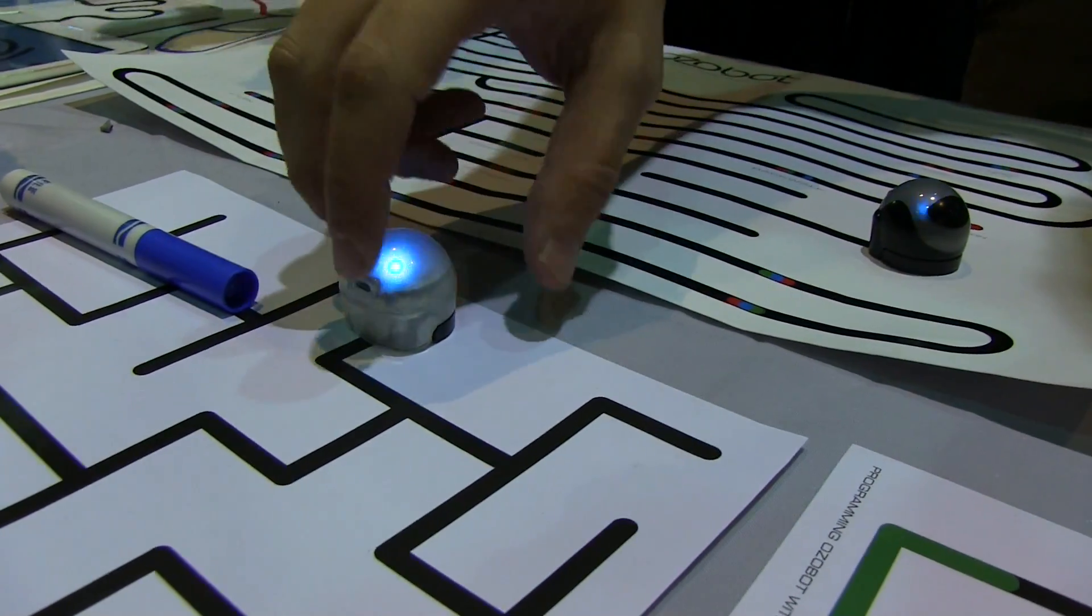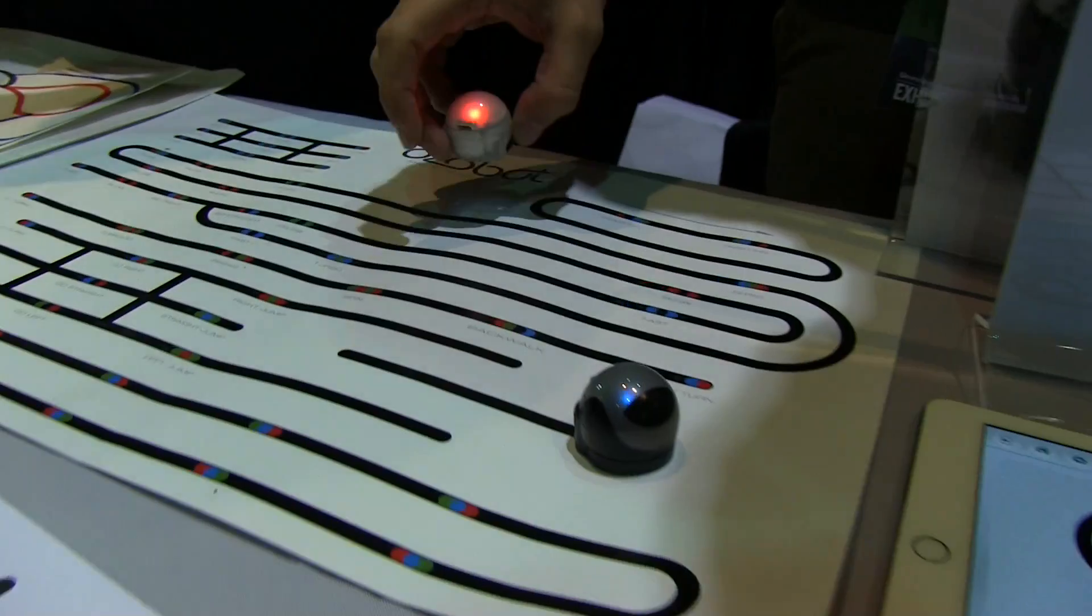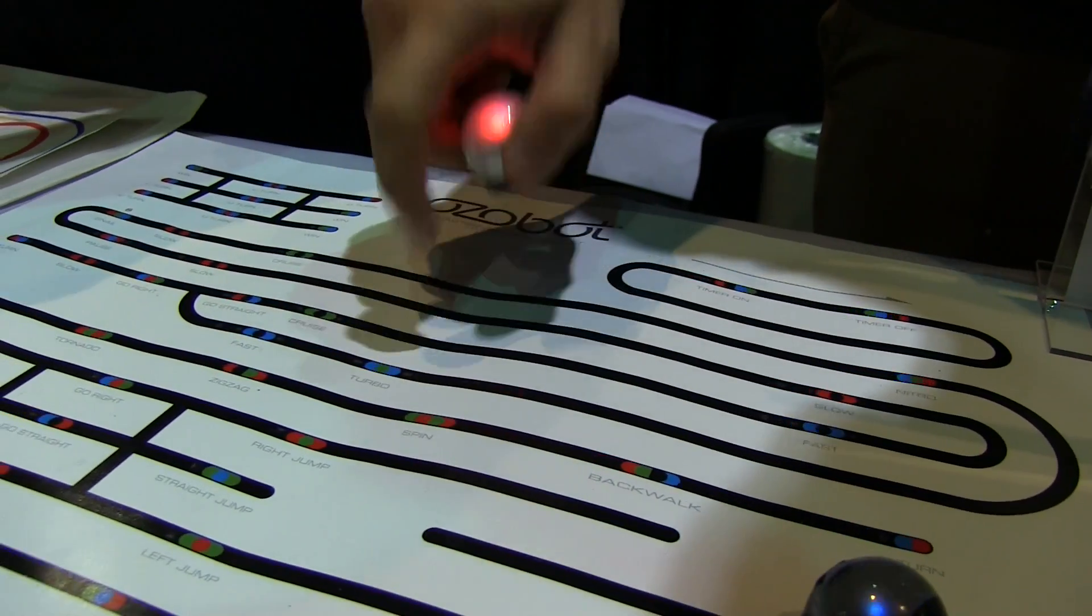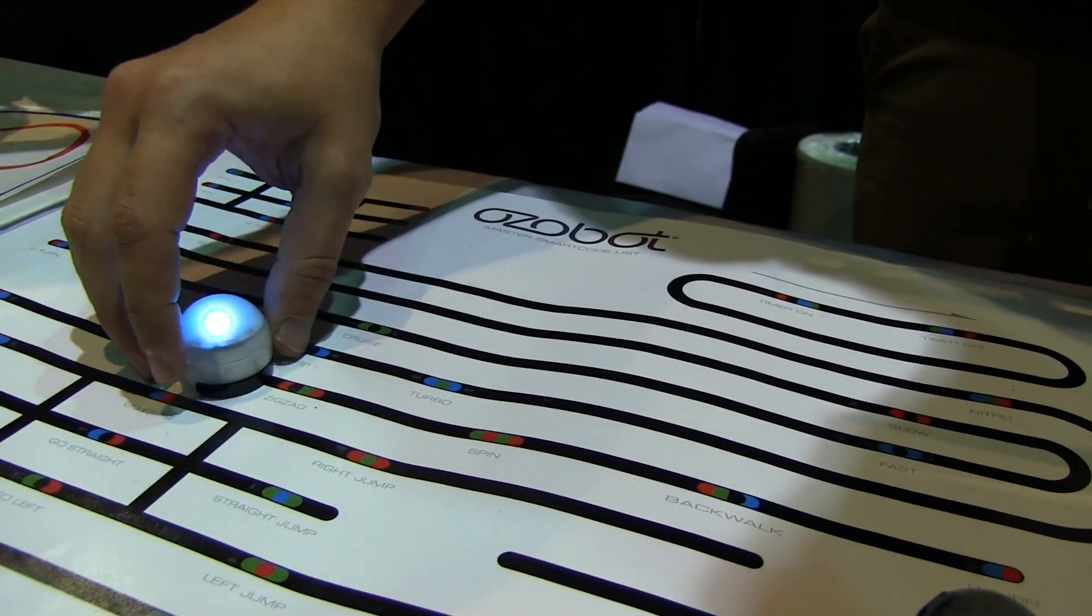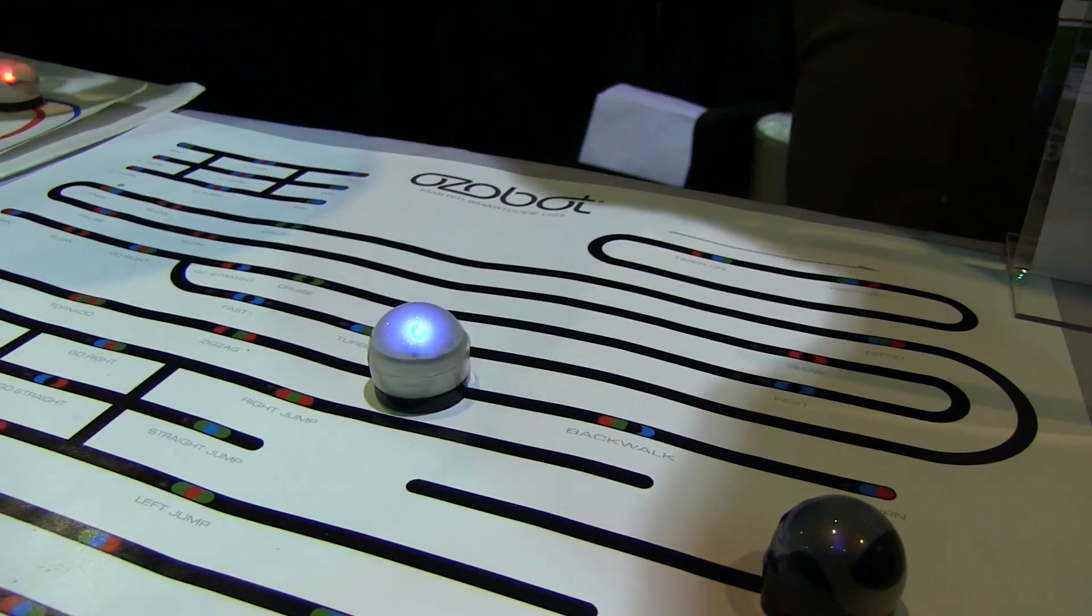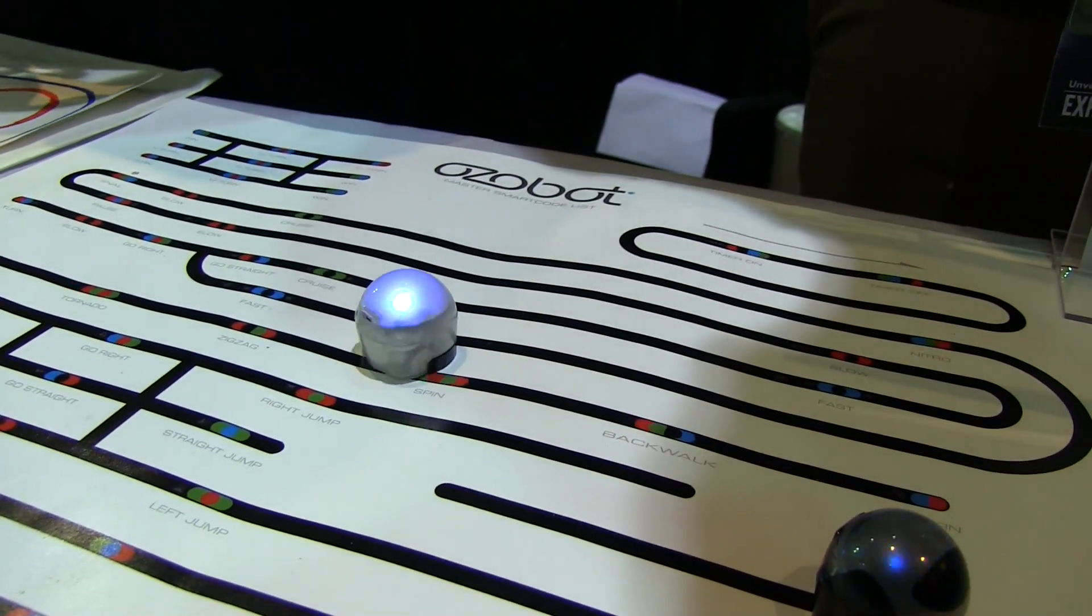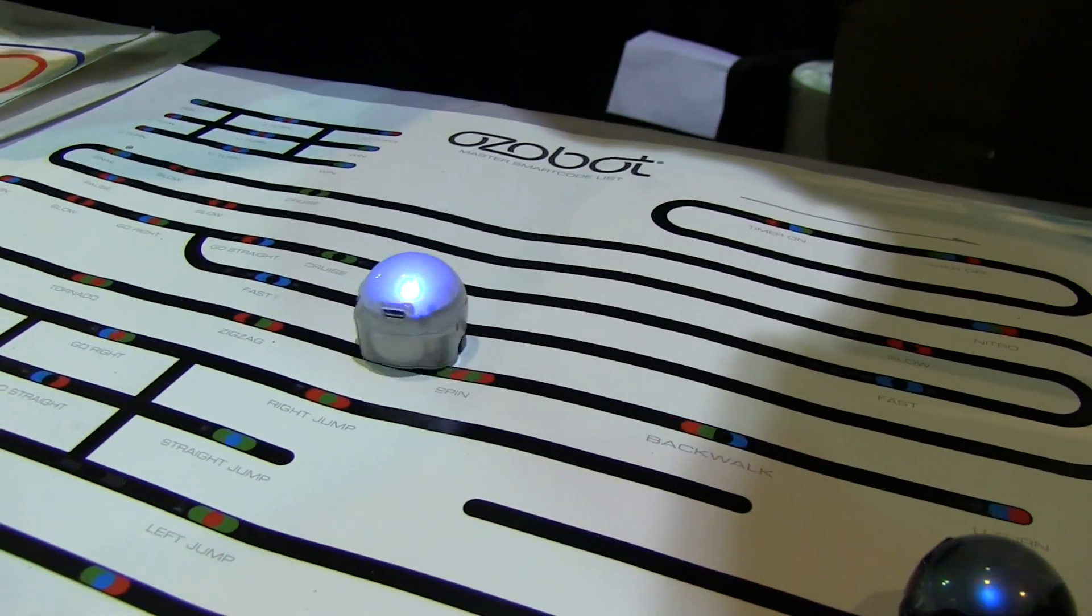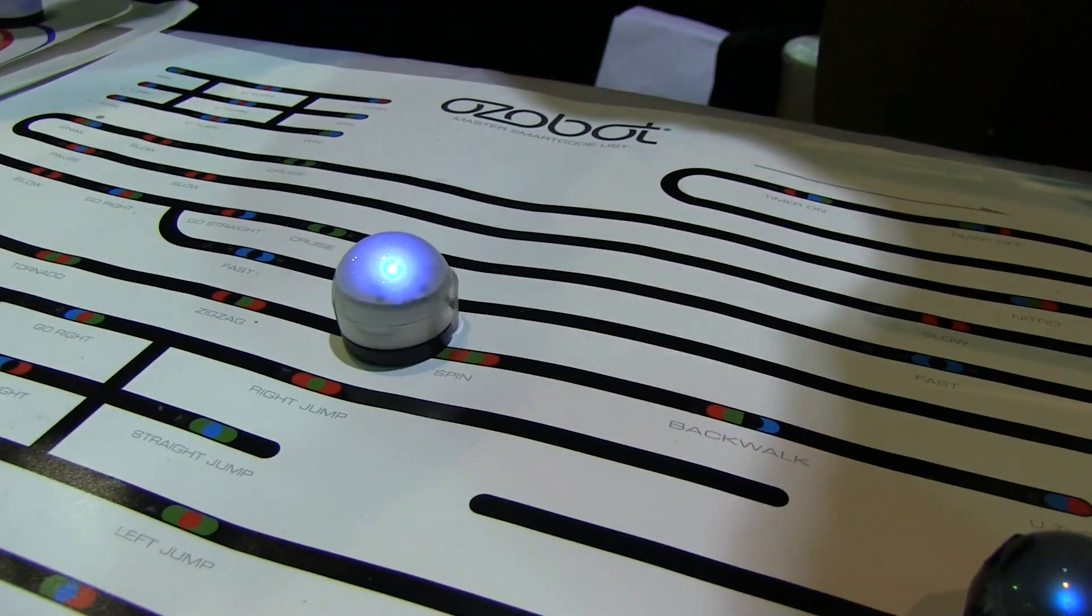This map isn't the greatest example, but these color codes that you see here have specific actions associated with it. So Ozobot go, see that's the spin code right there, it's one of my favorites. I think the little guy's actually dying, but he's trying real hard.